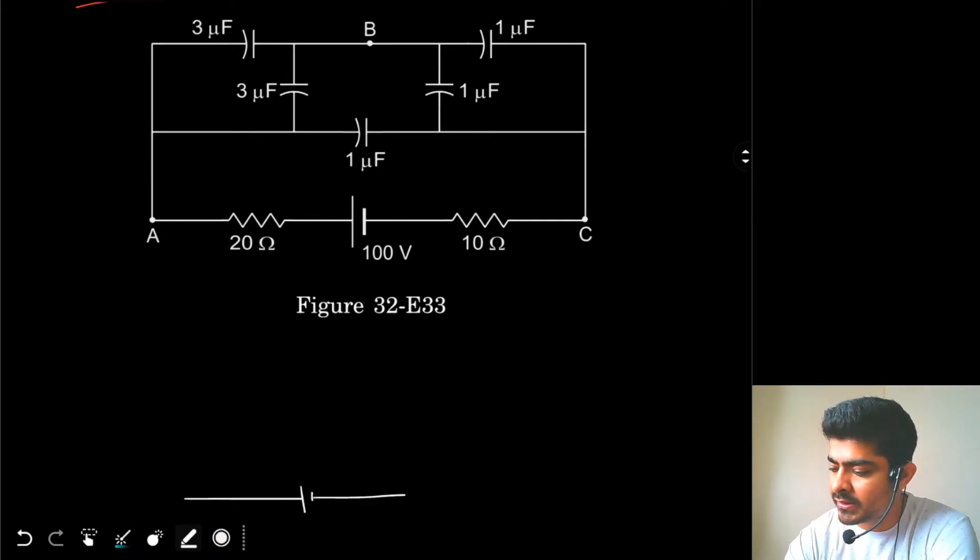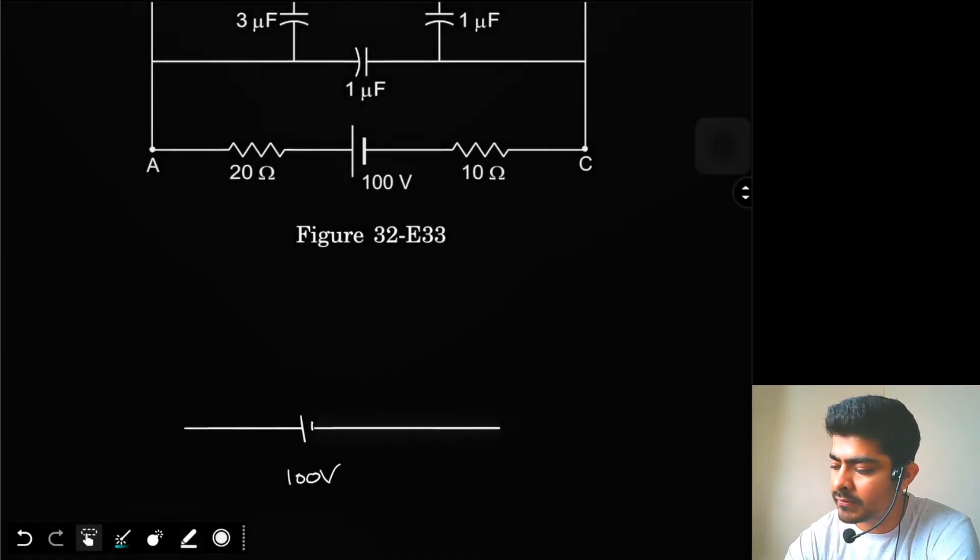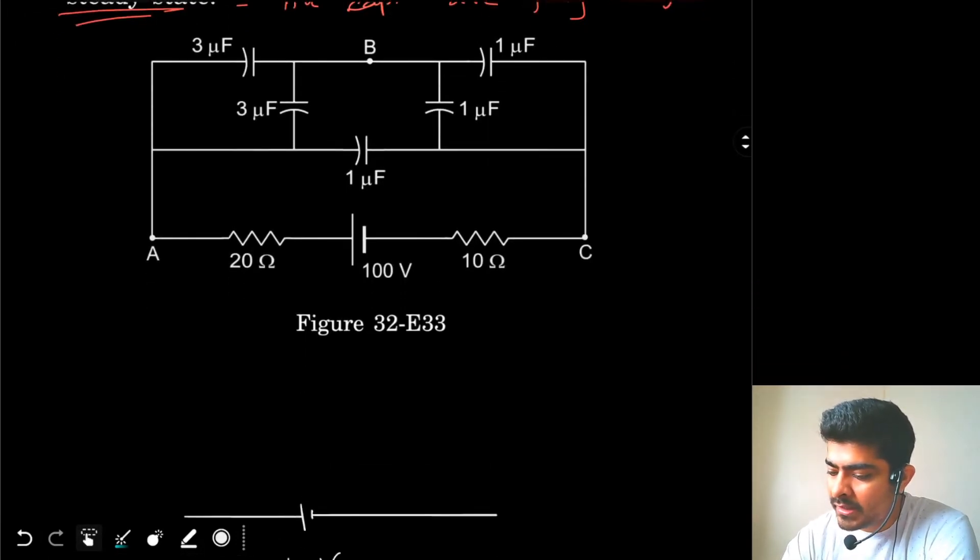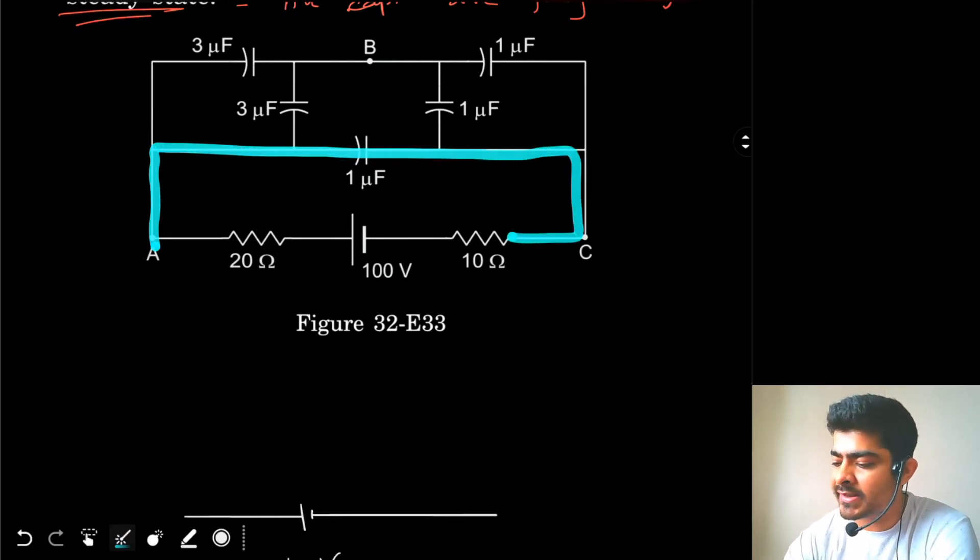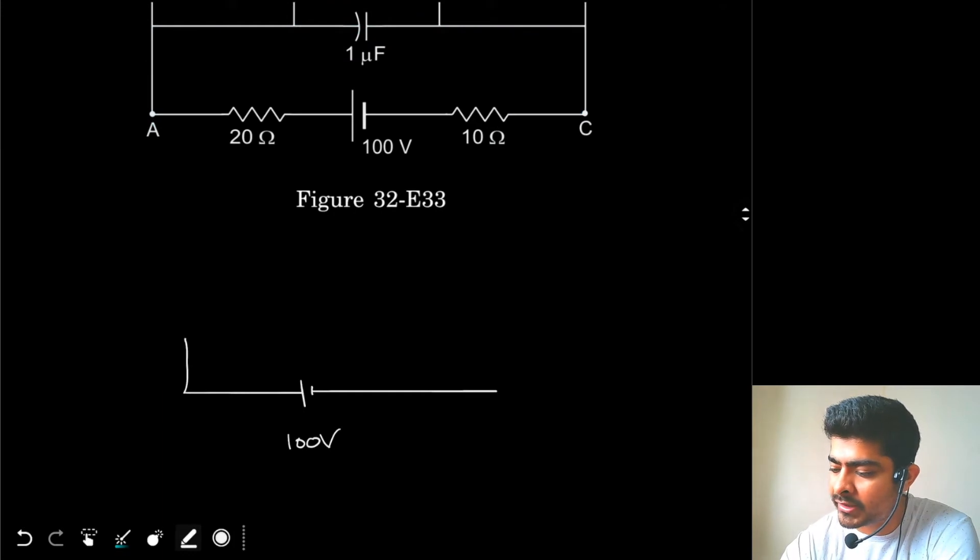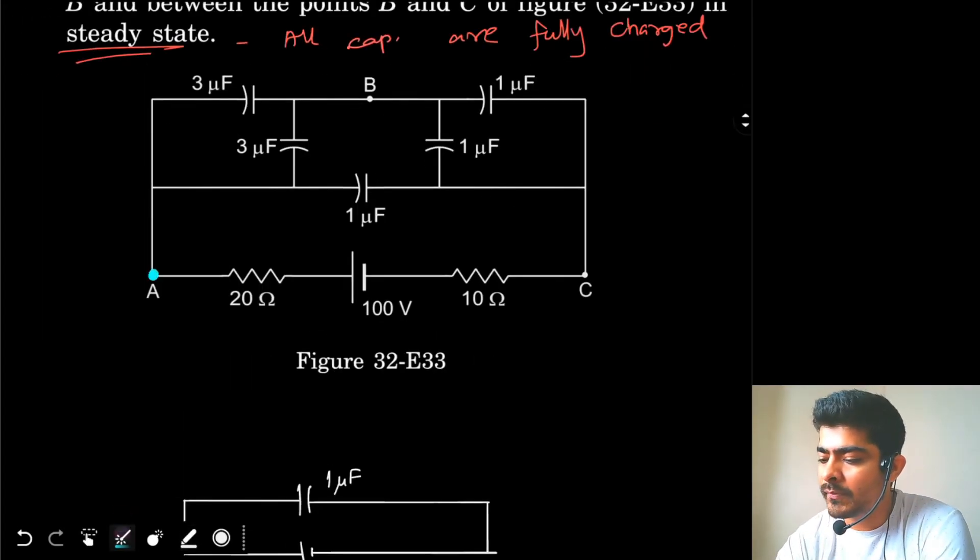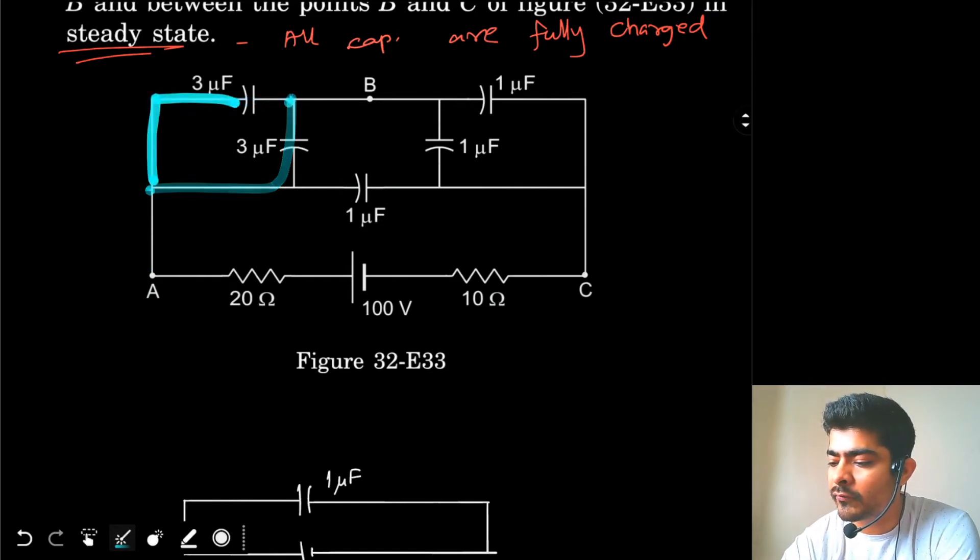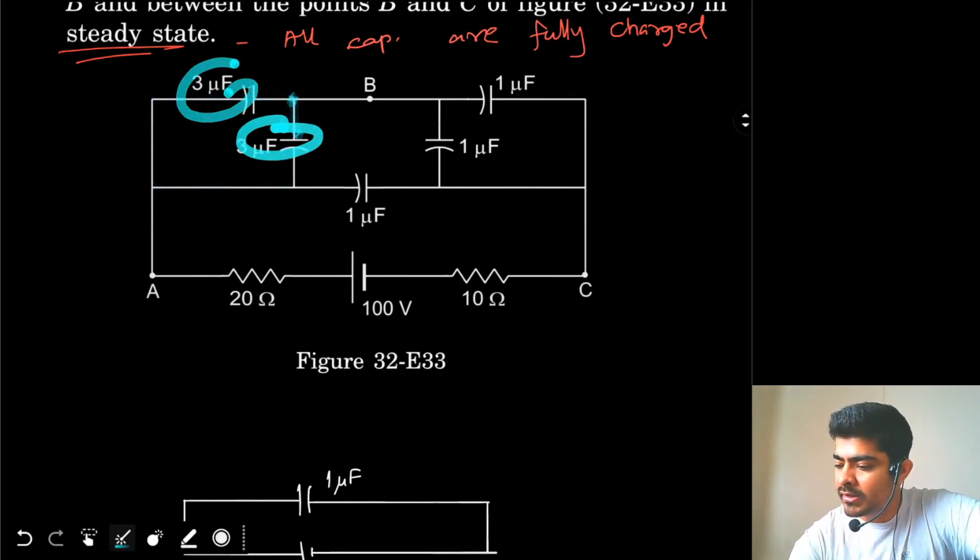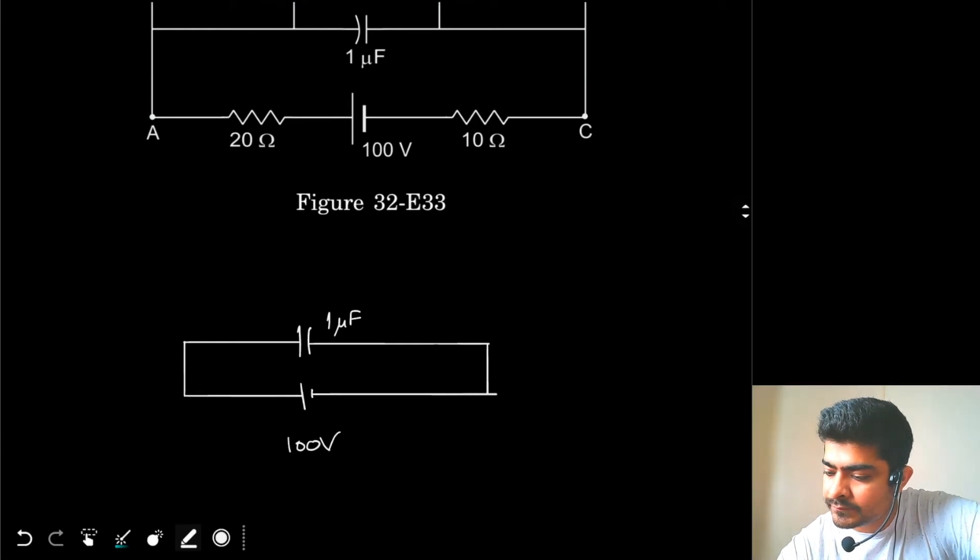So this is the 100V battery. From A, this 1uF is directly connected between A and C, so I can connect the 1uF directly over here. This is the 1uF capacitor. Now from A, I have this 3uF capacitor and this 3uF capacitor. The 3uF have their ends connected to each other, so these two are in parallel. So we can just connect them over here. So this is the 3uF capacitor, then I have another 3uF capacitor.